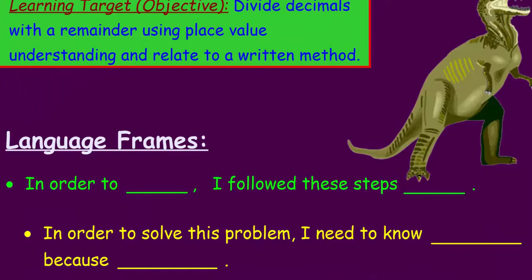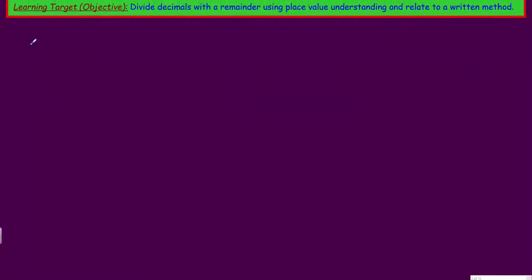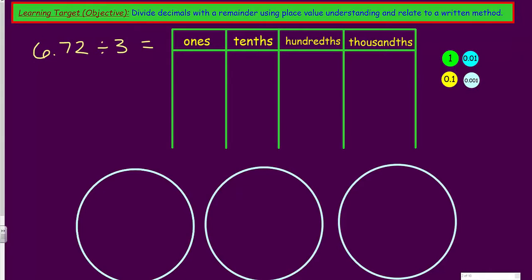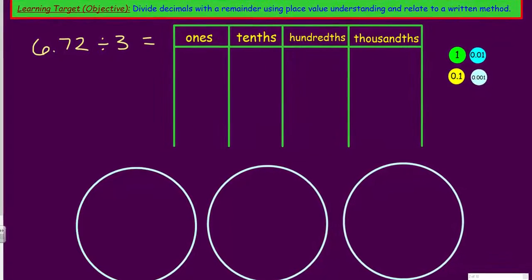We do have some language frames here. Are these the same ones? They look kind of new. We have one here — it says 'In order to blank, I followed these steps blank.' These are just like little frames so you can make it work when you want to articulate your mathematical reasoning, your understanding. In order to divide, I follow these steps, blah blah blah, and that's how you kind of answer. Same thing: 'In order to solve this problem I need to know blank because' and then my model shows my thinking. I will of course be using my own language to hopefully help you better understand our steps.